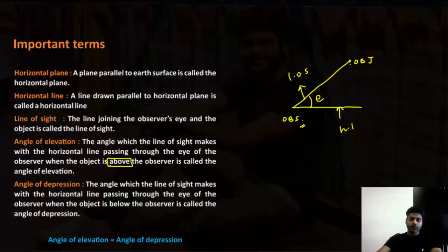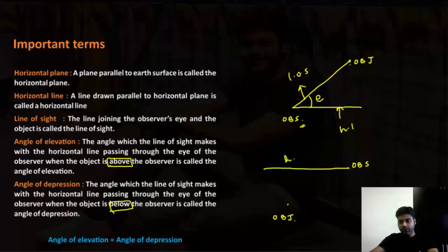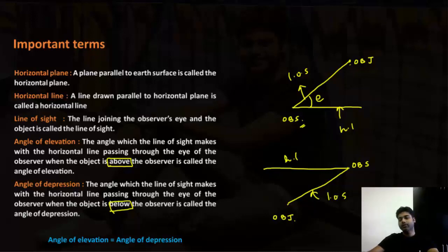Coming to angle of depression: the angle which the line of sight makes with the horizontal line passing through the observer's eye, when the object is below the observer, is called the angle of depression. So let's say the observer is at the top of a building and the object is on the ground — it could be a ship in the sea or a car on the road. Draw the horizontal line through the observer, then the line of sight joining the object and the observer. The angle between the horizontal line and the line of sight is the angle of depression.